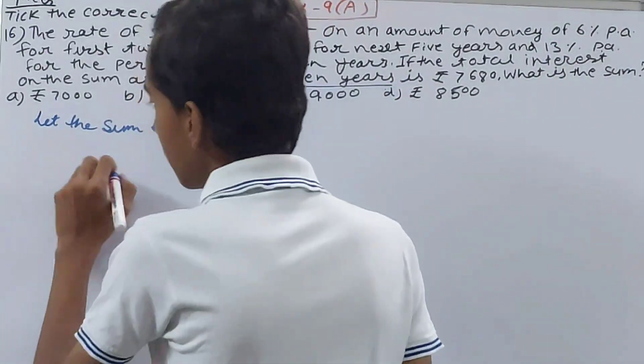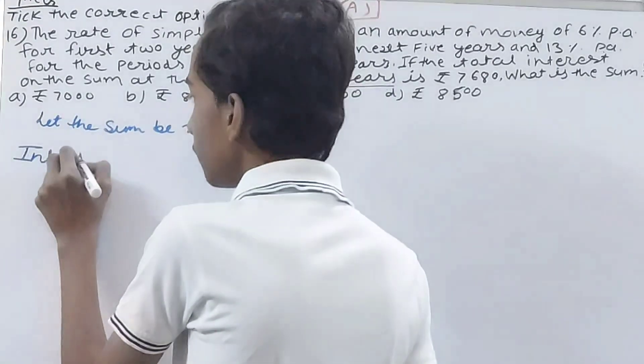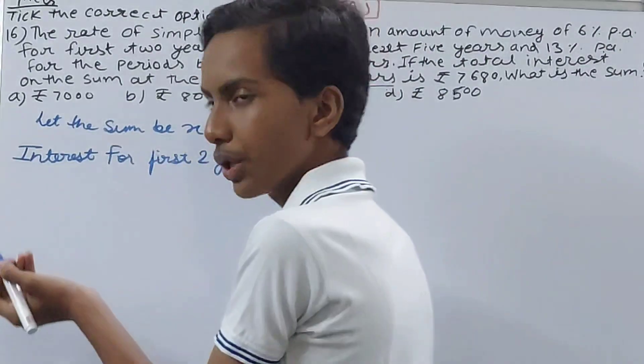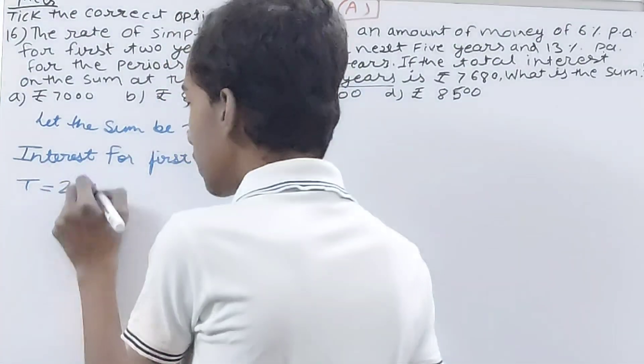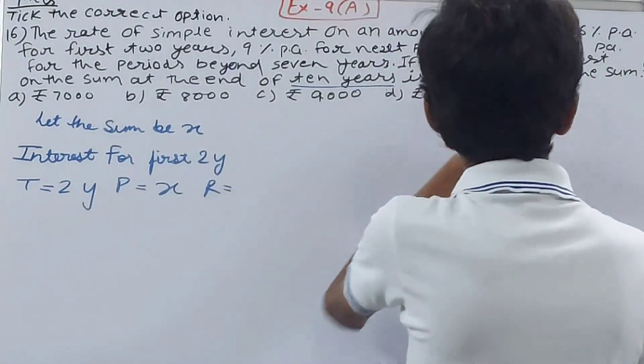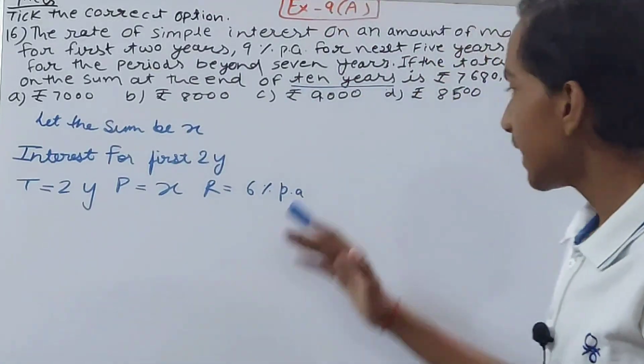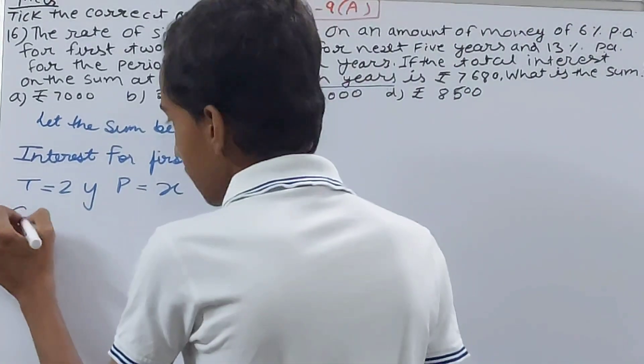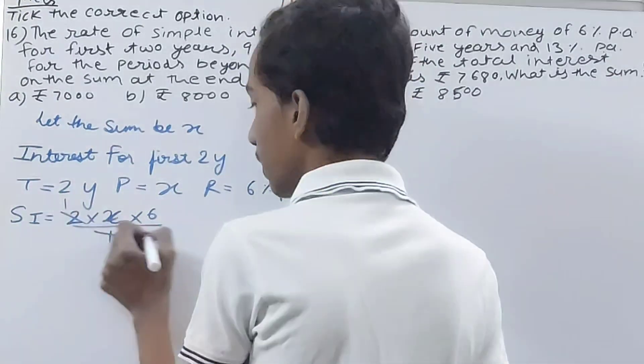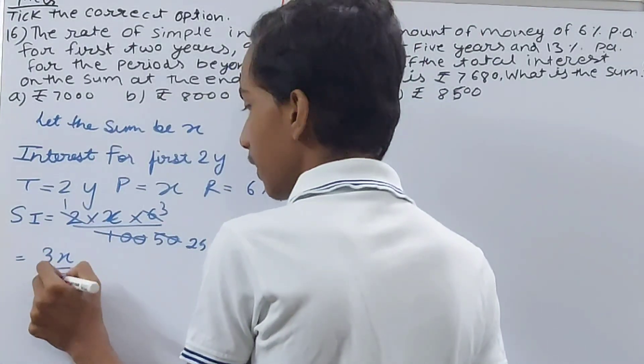We'll calculate the interest in parts. Interest for first two years: according to the question, the time is two years, principal is x, and rate is 6% per annum. So the simple interest becomes 2 times x times 6 by 100. Cancel this, cancel this, one and fifty, three and 25. So we have 3x by 25, the interest for the first two years.